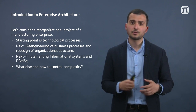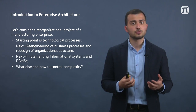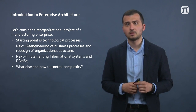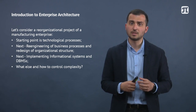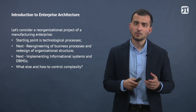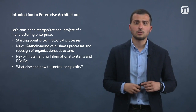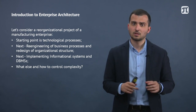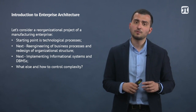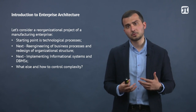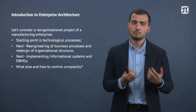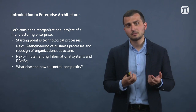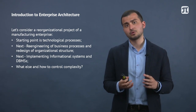Let us consider a reorganizational project of a manufacturing enterprise. Imagine you have to implement a number of changes in the structure of business. Normally, the starting point would be the technological process. You have to change the baseline of company processes. This will be followed by a re-engineering of business processes, which means changing how the process runs, sometimes changing the owner and the key resources.